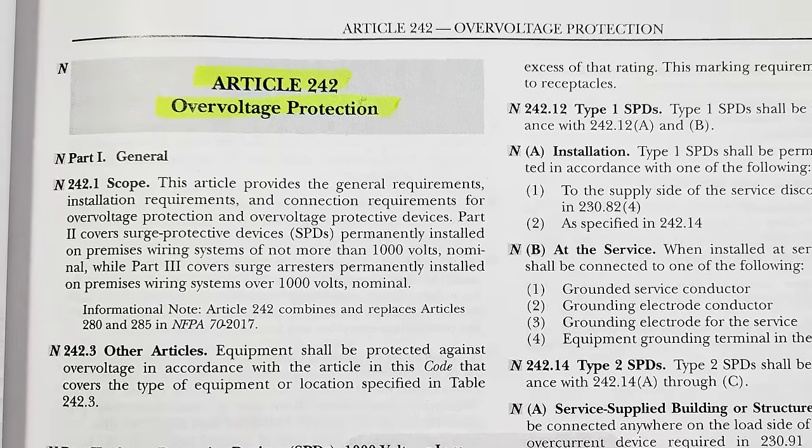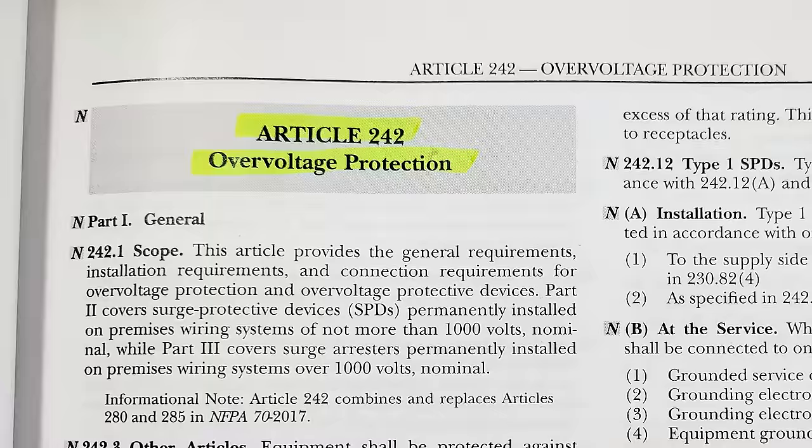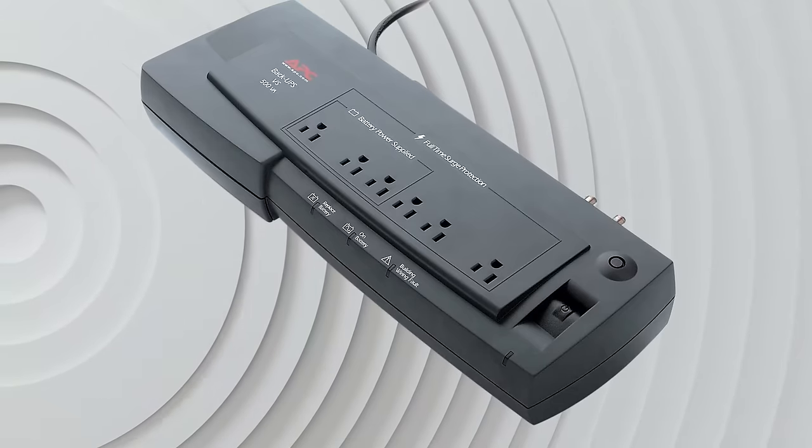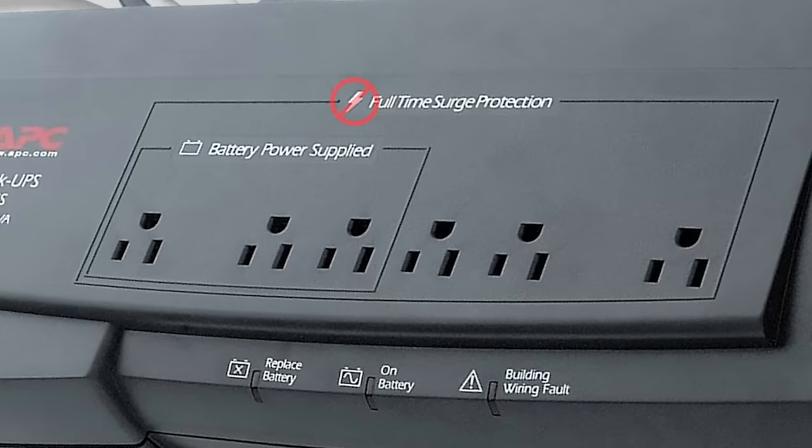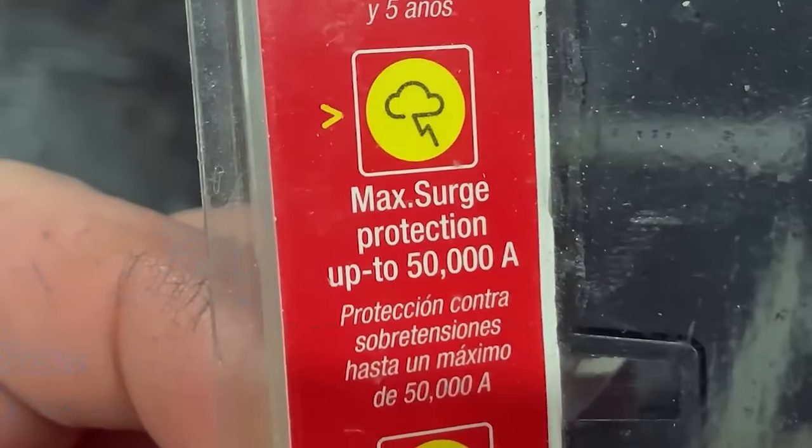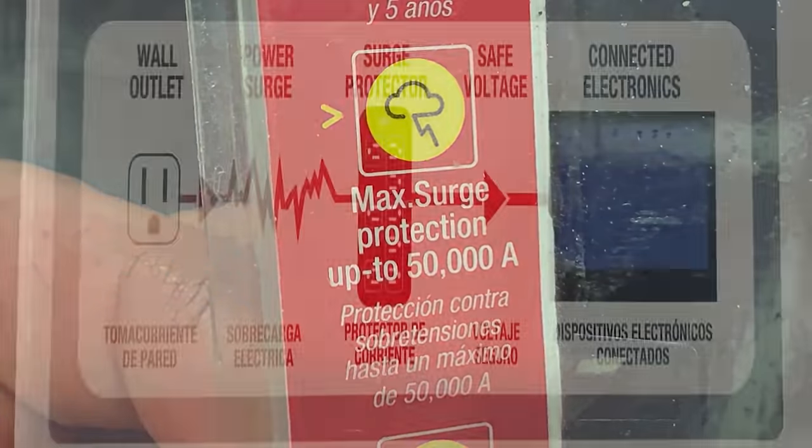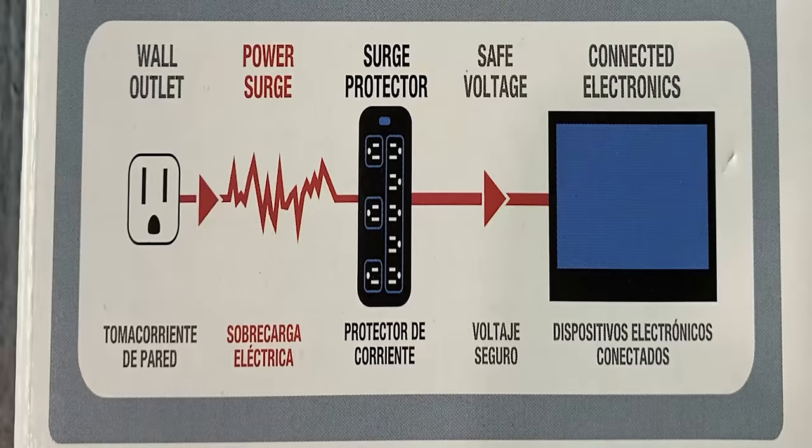Next is going to be overvoltage protection. So a very similar kind of thing, but very, very different. Overvoltage protection is what we mean when we say surge protectors. Surge protectors are not lightning protection. Lots of people think because a lot of the packaging and branding, they put little lightning bolts and say that it'll help with lightning protection. It is not for lightning protection.